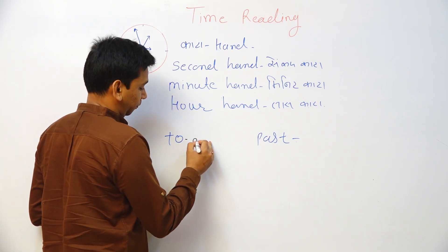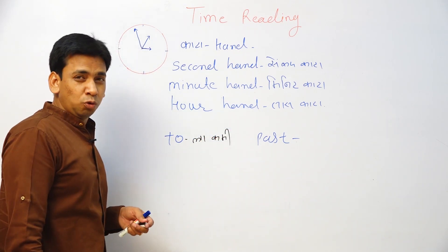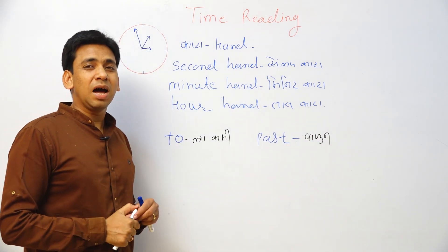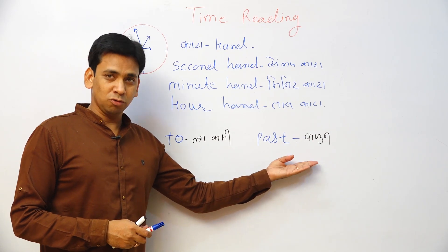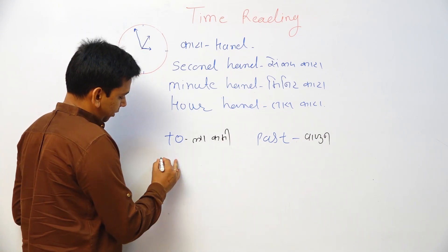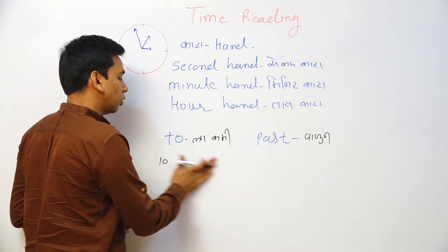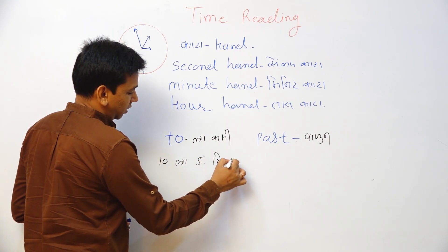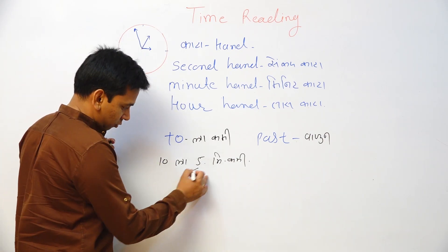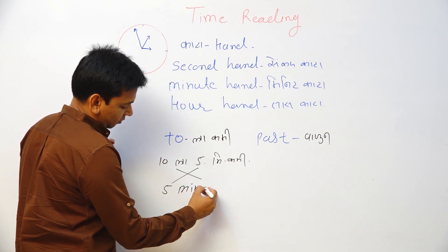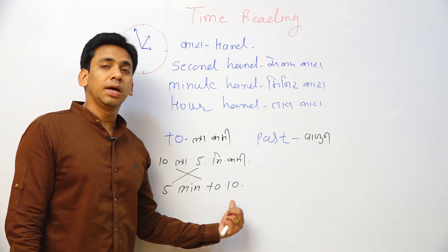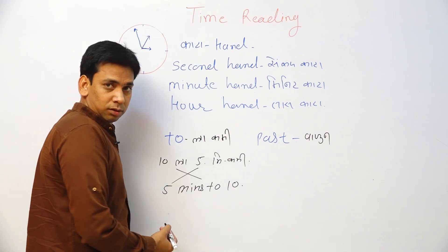This is called 'to'. This is called 'to' - when it's less than the hour. For example, 10 o'clock minus 5 minutes. How can I say? Five minutes to ten. Five minutes to ten. Clear? Again.